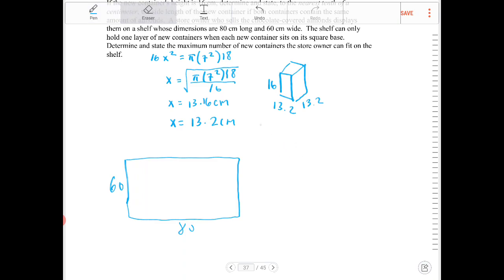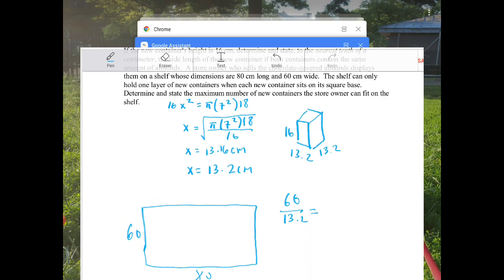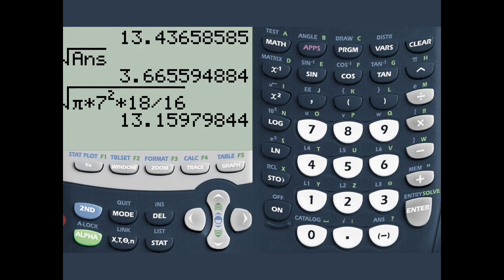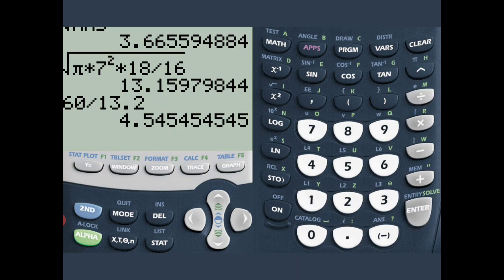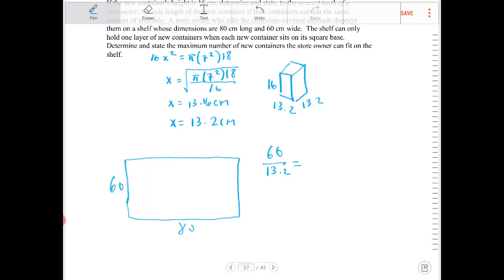So 13.2 can go into 60, so I'm going to take 60 and divide by 13.2, because that will give me the number of those boxes. 60 divided by 13.2, that would be 4.5. So I can only fit 4 going in this direction here. 1, 2, 3, 4, because it's 0.5.